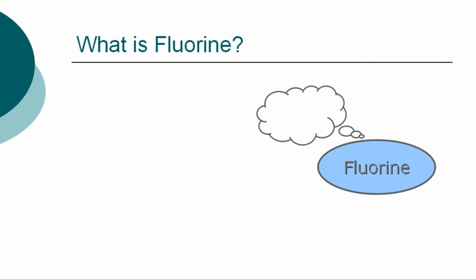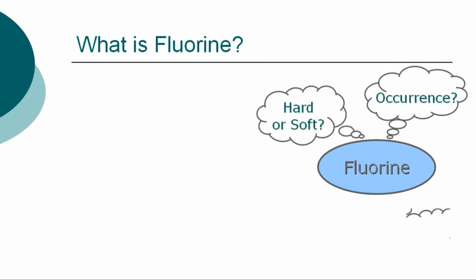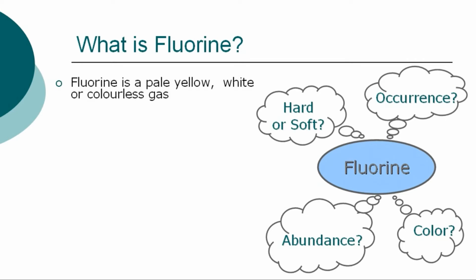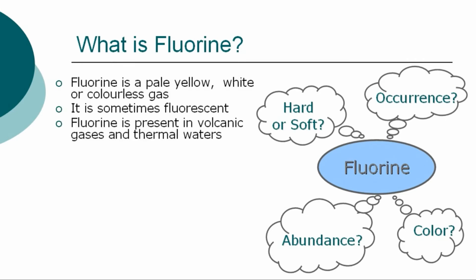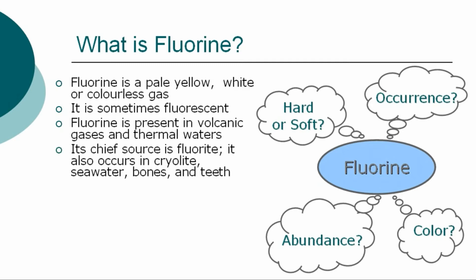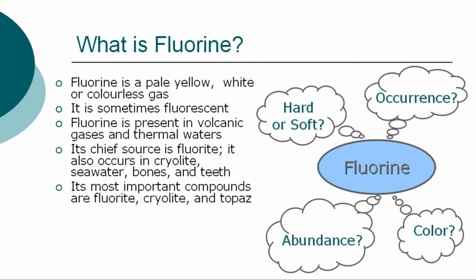In a general overview of the element, we can describe fluorine as a pale, yellow, white, or colorless gas, which can sometimes be fluorescent. It is present in volcanic gases and thermal waters. Its chief source is fluorite, but it also occurs in cryolite, seawater, bones, and teeth. Its most important compounds are fluorite, cryolite, and topaz.